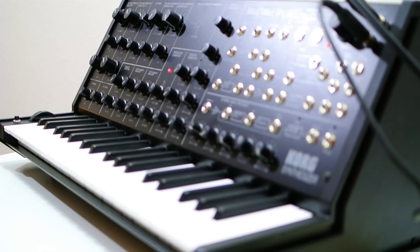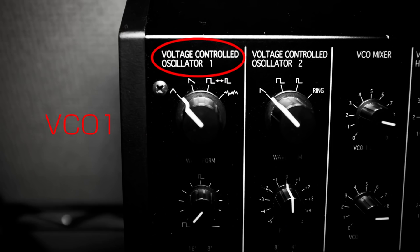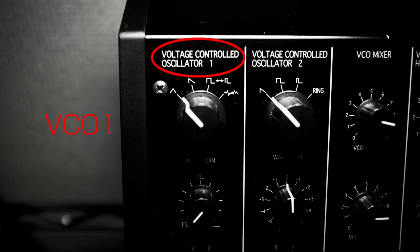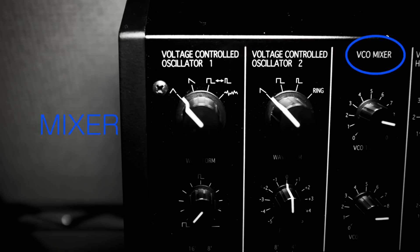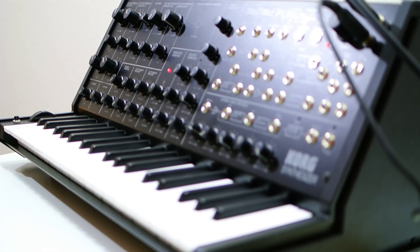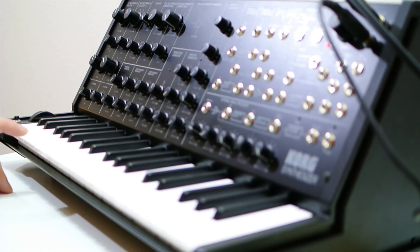There are two sets of VCOs in the MS-20 Mini. By combining these two VCOs, complex harmonics can be easily created. Let's increase the level of VCO2 and combine or layer these two VCOs together.